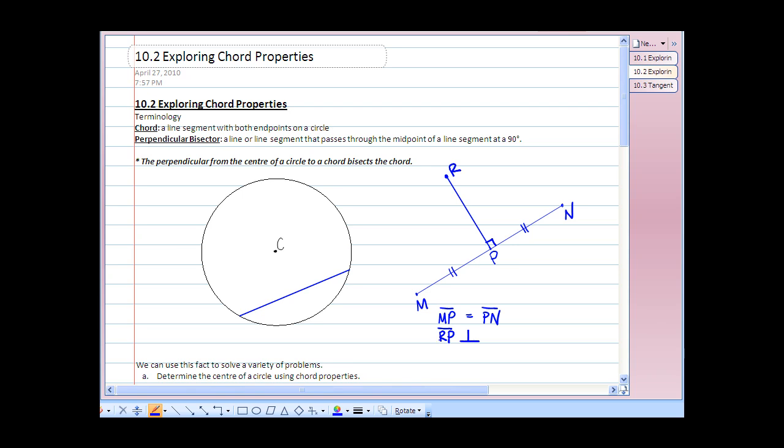So RP is perpendicular, so it's an upside down capital T. RP is perpendicular to MN, and since MP is equal to PN, then we could also say that RP is a perpendicular bisector of segment MN.